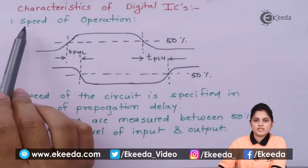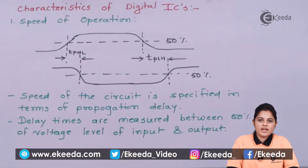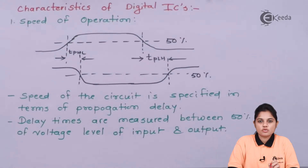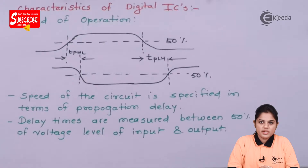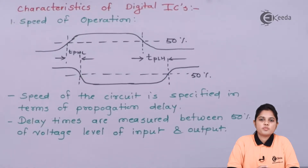The first characteristic is speed of operation. When it comes to any device, when you play with the input and output, you should always know about what is the speed of operation of the device. That means how much time it is taking to change its output when there is a change in input — that decides the speed of operation of that particular device.